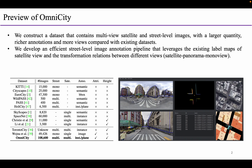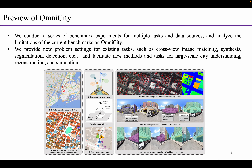In this work, we construct a dataset that contains multi-view satellite and street-level images with a larger quantity, richer annotations, and more views compared with existing datasets. We develop an efficient street-level image annotation pipeline that leverages the existing label maps of satellite view and the transformation relations between different views. In addition, we conduct a series of benchmark experiments for multiple tasks and data sources, and analyze the limitations of the current benchmarks on Omnicity. We also provide new problem settings for existing tasks and facilitate new methods and tasks for large-scale city understanding, reconstruction, and simulation.